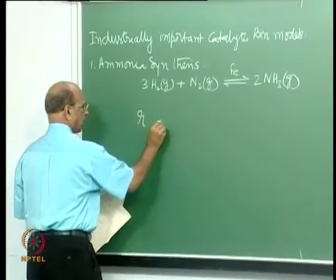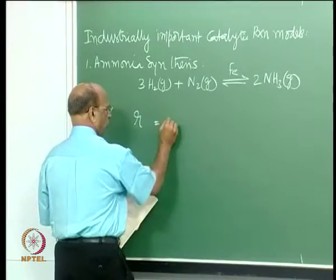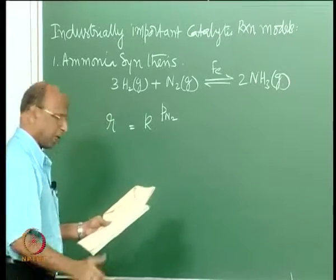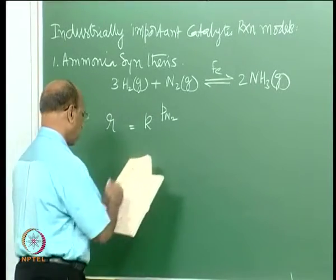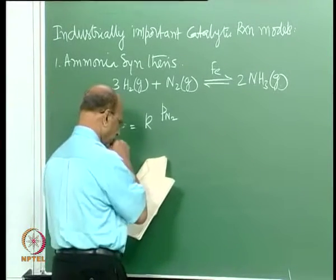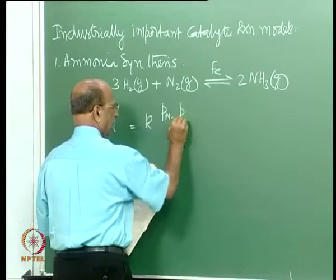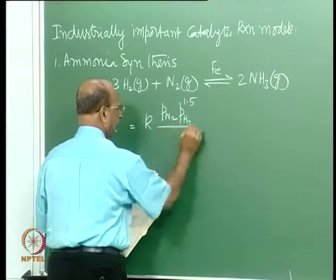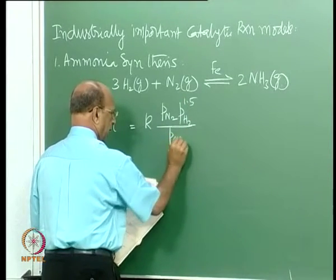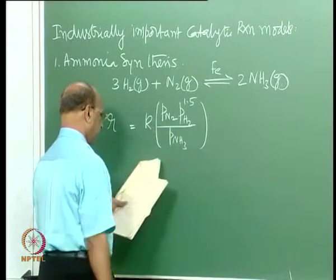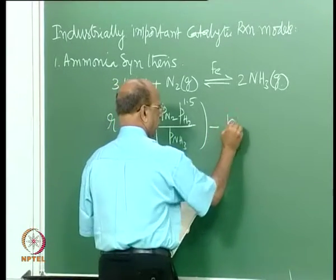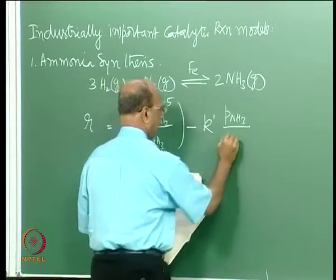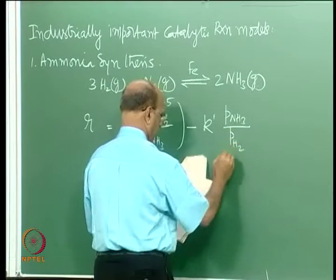The rate expression for this: r equals some constant k, times partial pressure of N₂, times partial pressure of H₂ to the power of 1.5, divided by P_NH₃.